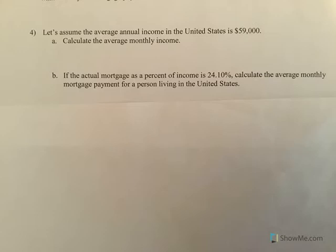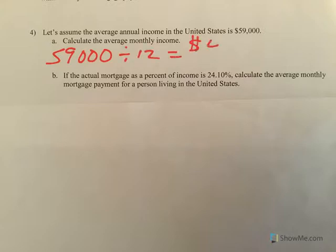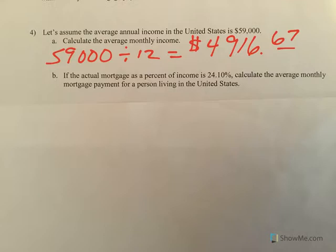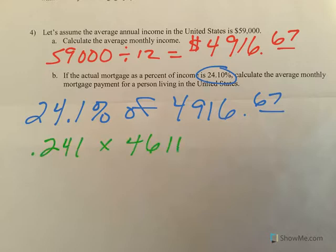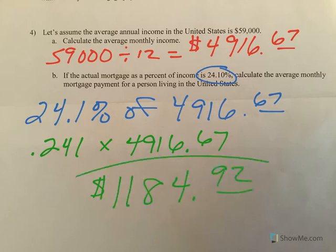Let's assume the average annual income in the U.S. is $59,000. Dividing by 12 gives us an average monthly income of $4,916.67 — and this is before taxes. If the actual mortgage payment as a percent of income is 24.1% — I said 25, pretty close — then we calculate the average monthly mortgage payment: 24.1% as a decimal is 0.241, times $4,916.67 gives an average monthly mortgage payment of about $1,184.92 in the U.S.